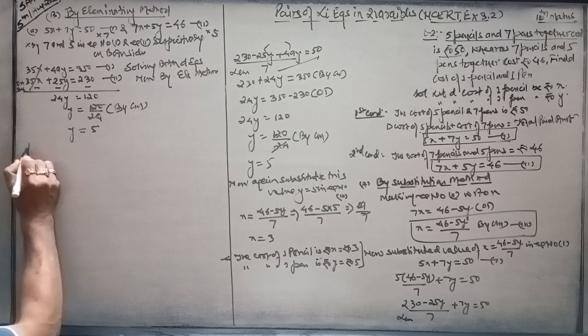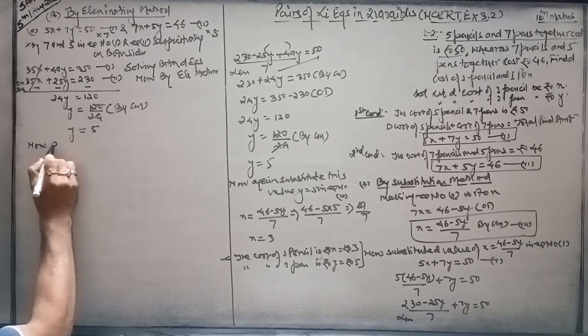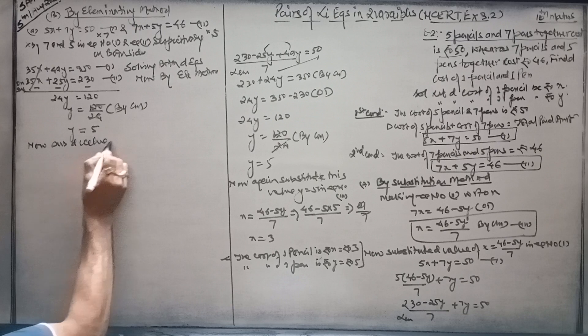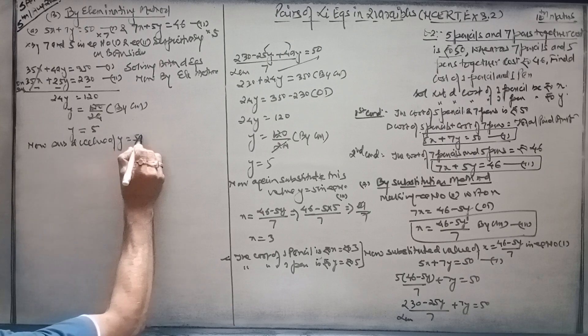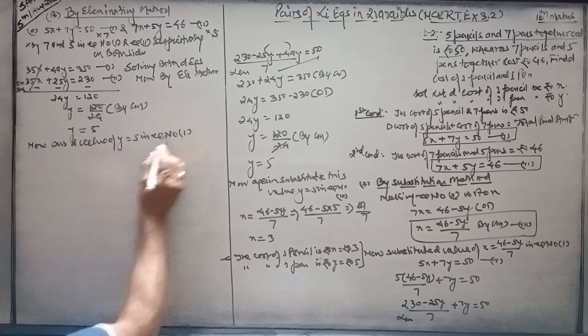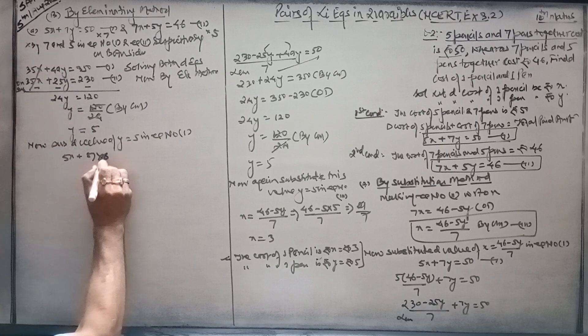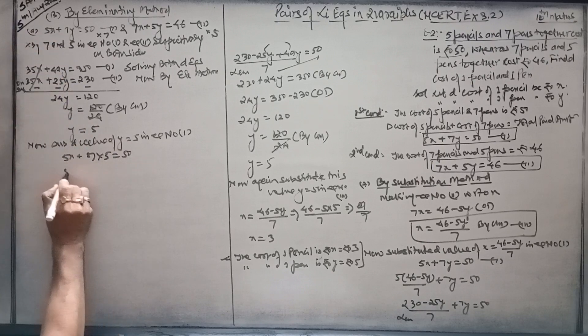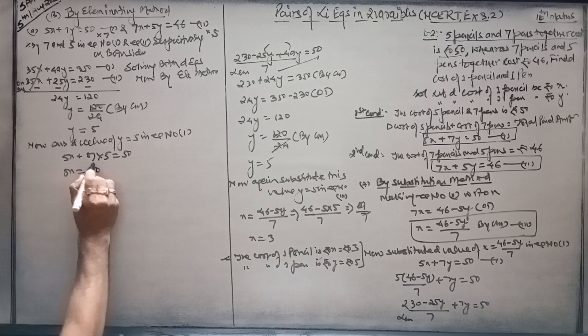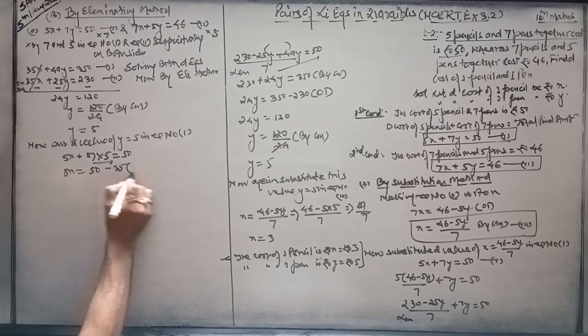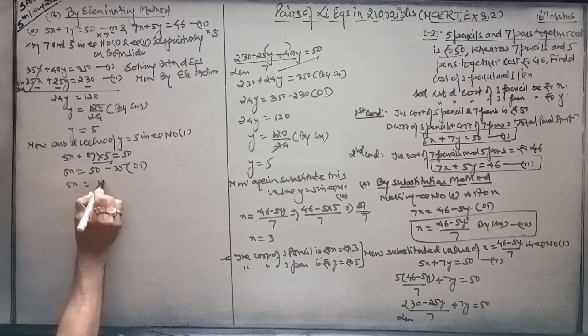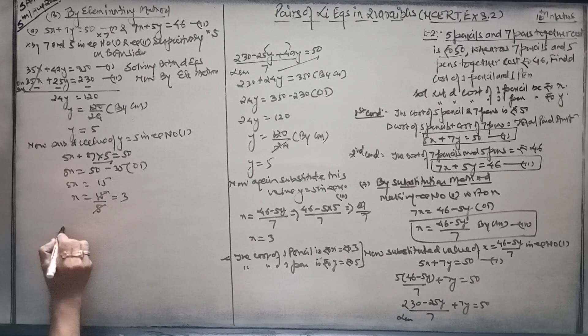Substitute that value y is equal to 5 in equation number one. 5x plus 7y equals 15. 5x plus 35 equals 15. 5x is equal to minus 20. x is equal to minus 4.